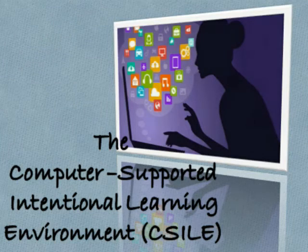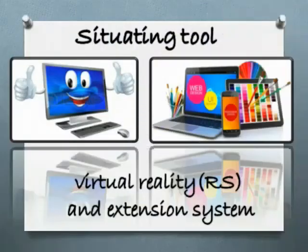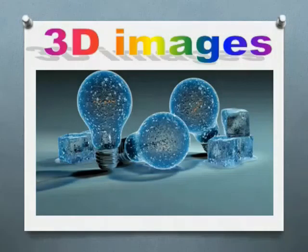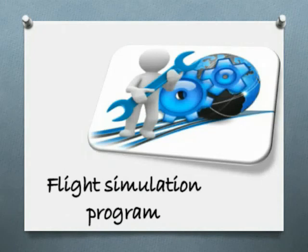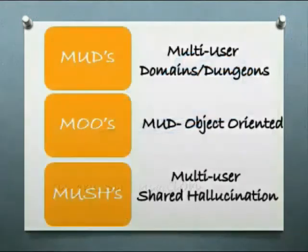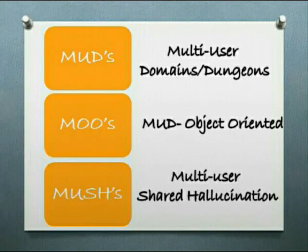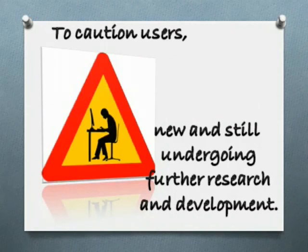Students can enter their ideas in notes and respond to each other's ideas. The Situating tool: by means of virtual reality and extension systems, the computer can create 3D images on display to give the user the feeling of being situated in a virtual environment. The flight simulation program is an example of a situating tool which places the user in a simulated flying environment. Multi-user domains, object-oriented environments, and multi-user shared hallucination systems are examples of situating system reality, such as writing on a notice board through simple text-based interfaces. The computer as a situating tool is new and still undergoing research and development.